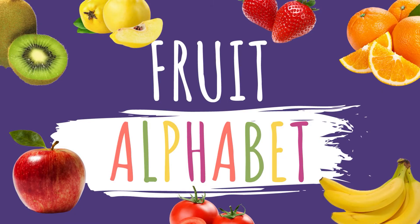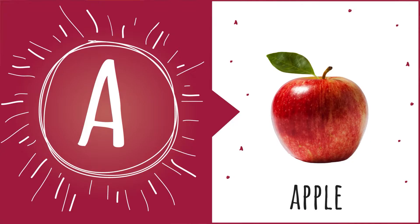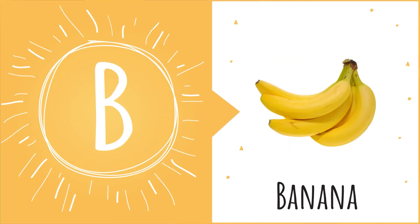Hey, Sprouts! Let's say the fruit alphabet. A is for apple. B is for banana.